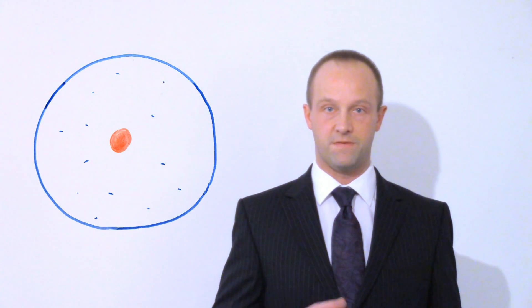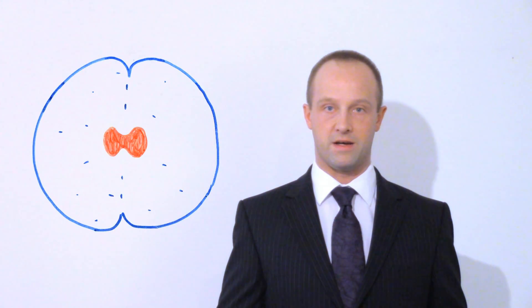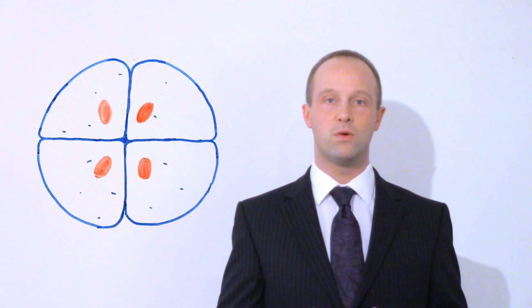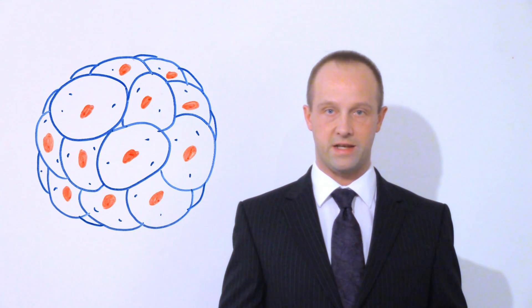Stem cells are a really interesting type of cell, because they're a type of cell which can become any other type of cell, and that makes them really interesting to medical science and medical research. Once we were all just a clump of stem cells, after the egg cell is fertilised by the sperm cell, it starts to divide, and all of those cells are identical initially. These are what we call undifferentiated stem cells — that means they haven't become the type of cell they're going to be; they could become any type of cell.